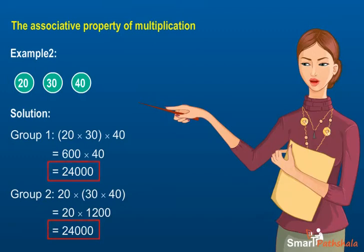As in both the groups the product is the same, we can say that multiplication is associative for whole numbers.